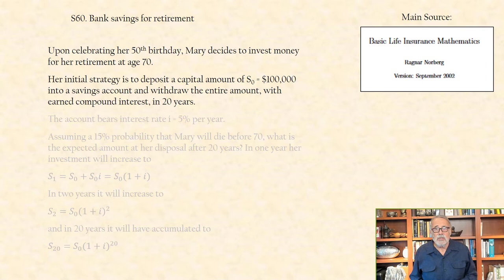Her initial strategy is to deposit a capital amount of S0 equal to $100,000 into a savings account and withdraw the entire amount with earned compound interest in 20 years.